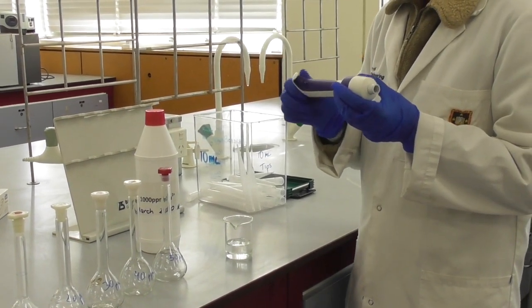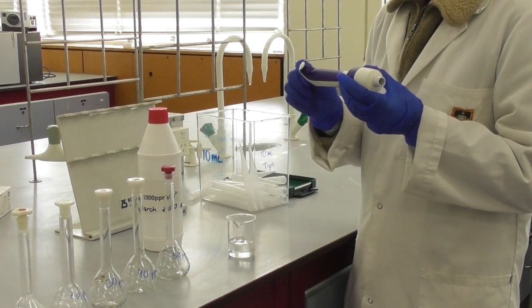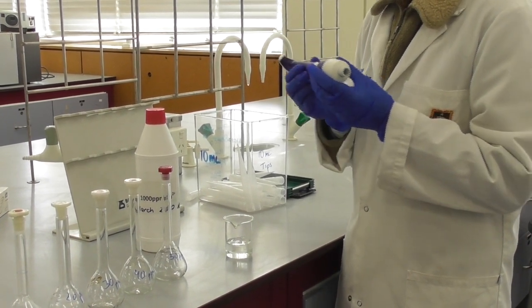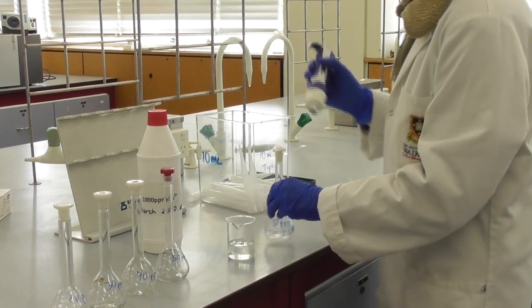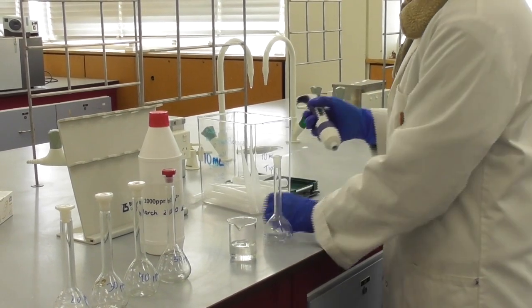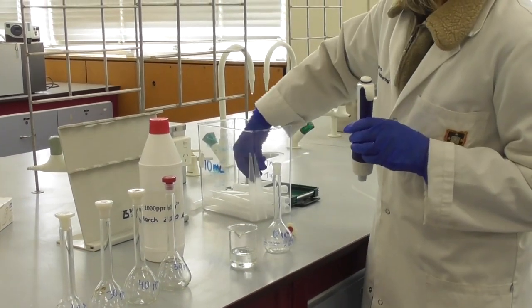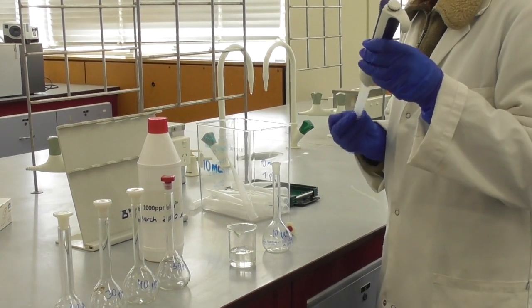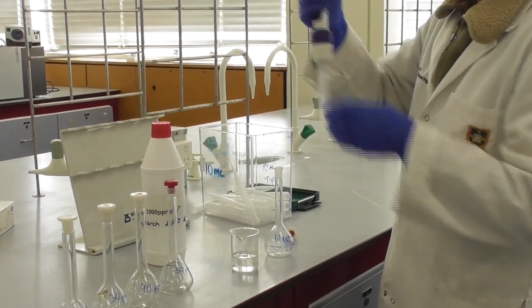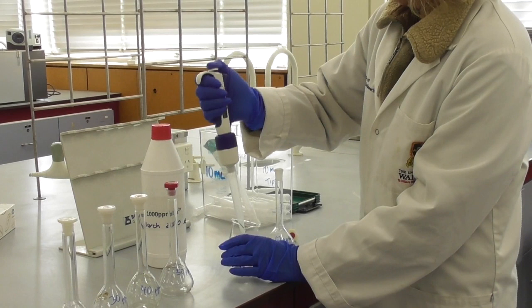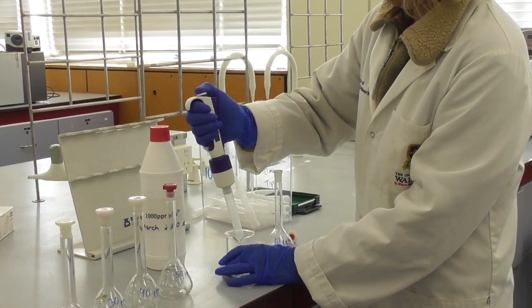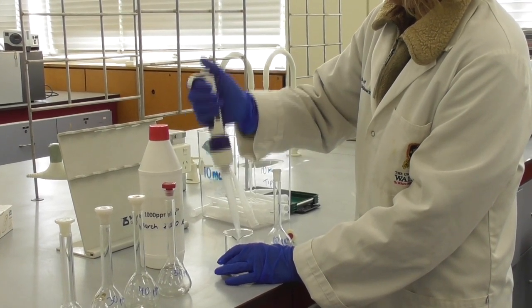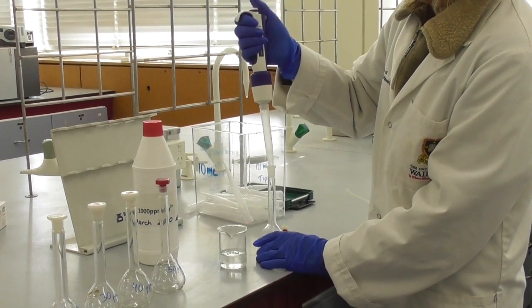I grab a micropipette and set this to the correct volume for my 10 ppm standard stock solution. I add a clean tip to my micropipette and then measure out the 1000 ppm stock into my volumetric flask.